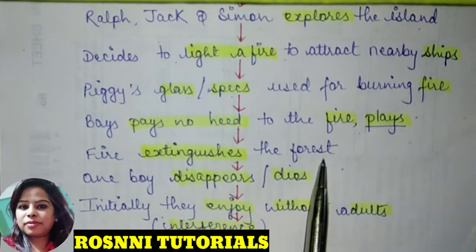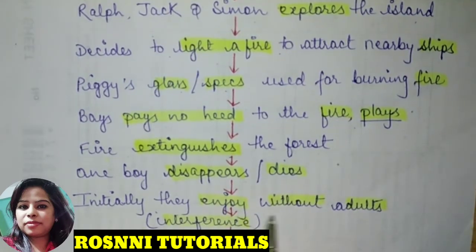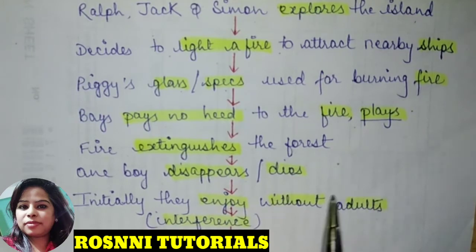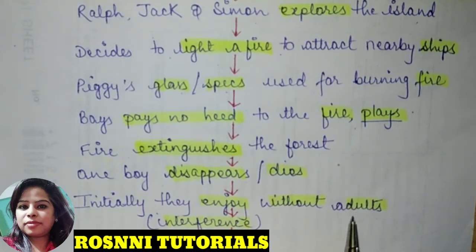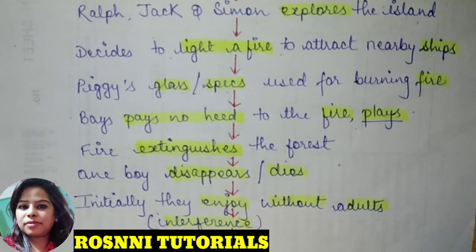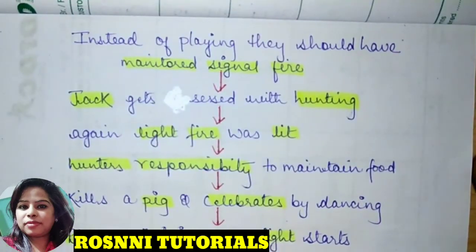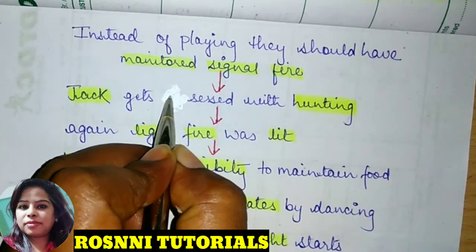The fire extinguished the entire forest and one young boy disappeared and died. Initially the boys enjoyed themselves without adult supervision, happy without any interference from elders. But instead of playing games, they should have monitored the signal fire so they could get help and leave the island.